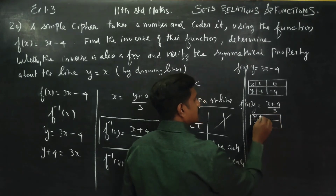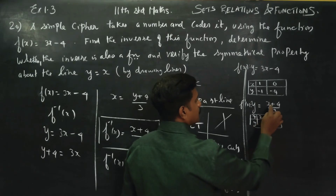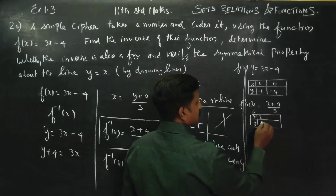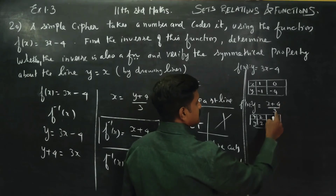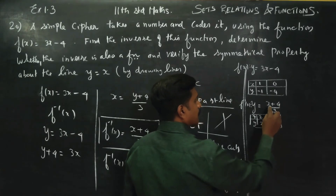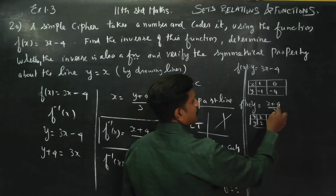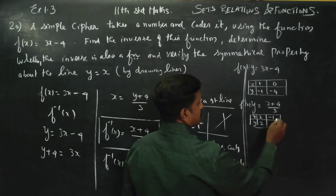For x equal to 2: 2 plus 4 is 6, and 6 by 3 is 2. So the point is (2, 2). For x equal to minus 1: minus 1 plus 4 by 3 gives 3 by 3 equal to 1. So the point is (−1, 1).